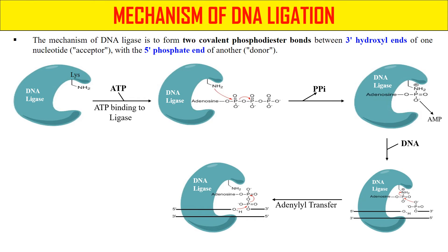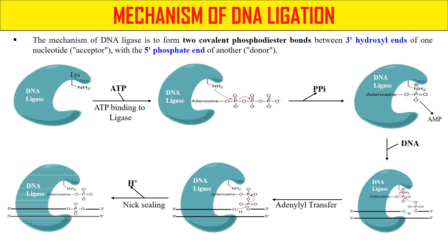Now the hydroxyl group of the 5' end will also attack this phosphate group. There will be a nucleophilic attack again by this oxygen to the phosphate group at the 3' end, which will ultimately make a phosphodiester bond. In the next step there is nick sealing, hydrogen ions are removed, and there is the complete formation of a phosphodiester bond between these two broken fragments. So the fragments are now joined together. This is the mechanism by which the DNA ligase enzyme works.